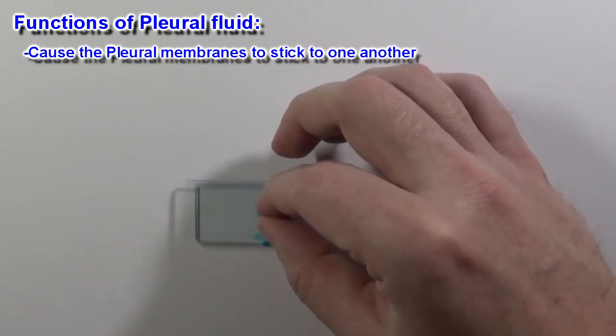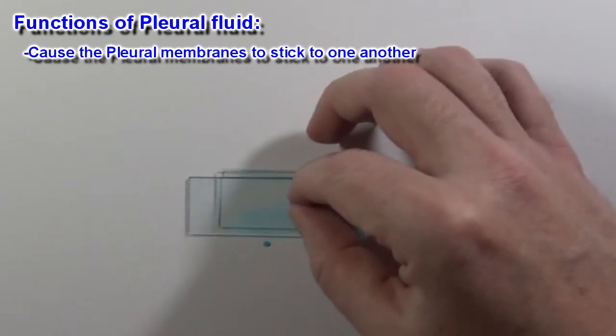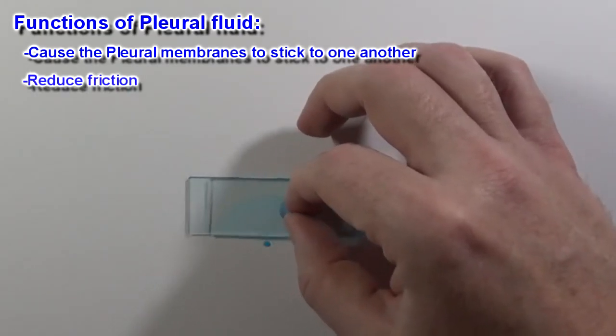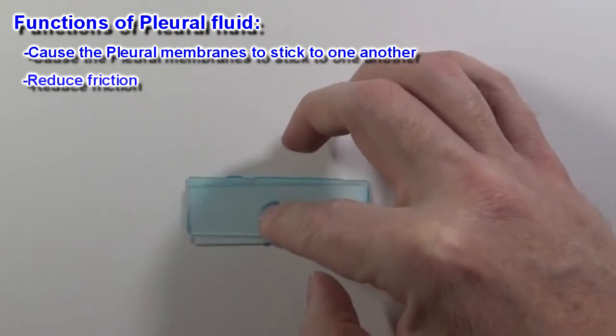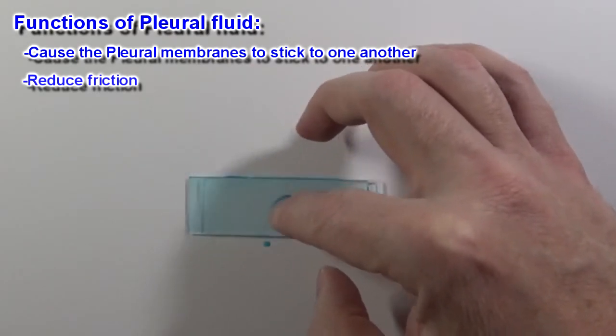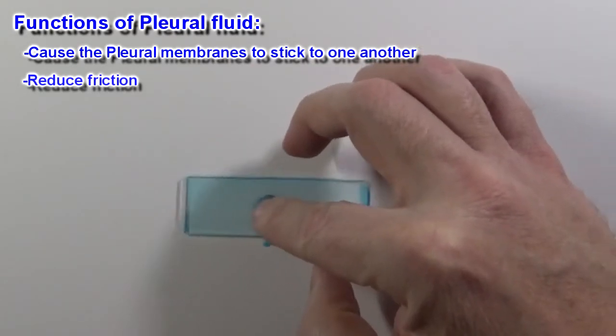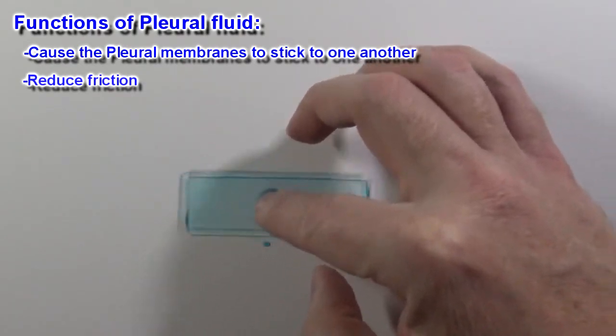And also, these slides are going to move freely over one another. This is another function of the pleural fluid. The ribcage is going to be moving constantly when we breathe. The pleural fluid helps to lubricate the surfaces in order to decrease friction.